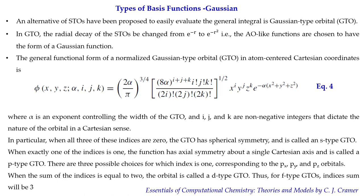In this form of the Gaussian basis set, your calculations will be easier. The general form of the basis functions depends on e to the power minus alpha times (x squared plus y squared plus z squared), where alpha is the exponent controlling the width of the GTO, and i, j, k are non-negative integers from Cartesian coordinates. If all three indices are zero, you get an s-type orbital with spherical symmetry.